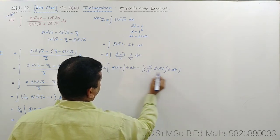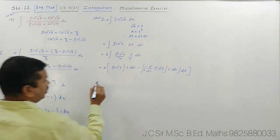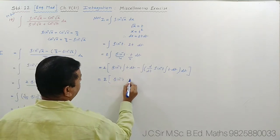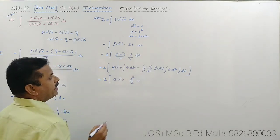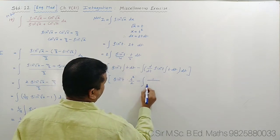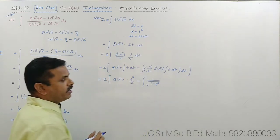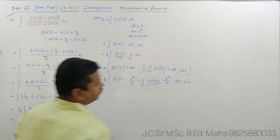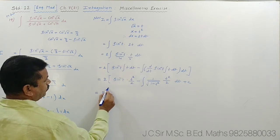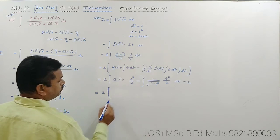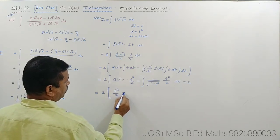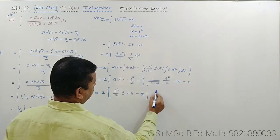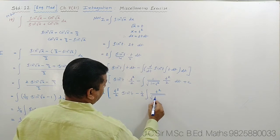For ∫ t²/√(1−t²) dt, write t² = 1−(1−t²), so: ∫ [1/√(1−t²) − √(1−t²)] dt. The first part integrates to sin⁻¹(t). The second part ∫ √(1−t²) dt uses the formula ∫ √(a²−x²) dx = (x/2)·√(a²−x²) + (a²/2)·sin⁻¹(x/a), giving (t/2)·√(1−t²) + (1/2)·sin⁻¹(t).